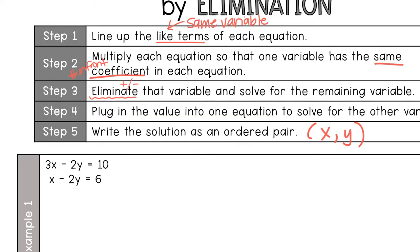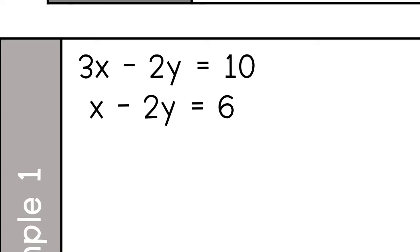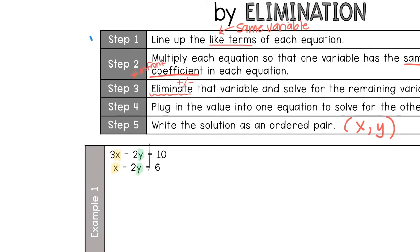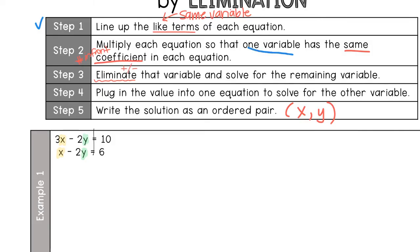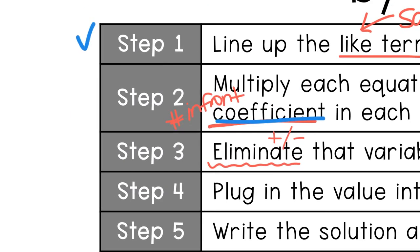Let's look at our first example. Step one is already done for us — they're lined up according to their variable: x is on top of x, y is on top of y, the equal signs are lined up, and then our constants. Step two is also already done for us. If you look at those two equations, the y's both have a 2 in front of them — they have the same coefficient.